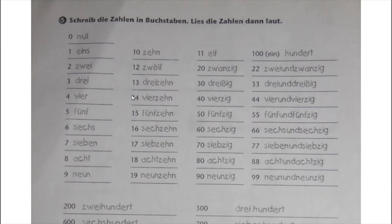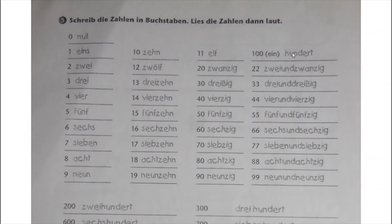Number five: write down the numbers in words and then read them aloud. We go through: 0, 1, 2, 3, 4, 5, 6, 7, 8, 9, 10, 11, 12, 13, 14, 15, 16, 17, 18, 19, 20. Then: 20, 30, 40, 50, 60, 70, 80, 90, 100. And compound numbers like 22, 33, 44, 55, 66, 67, 88, 99.